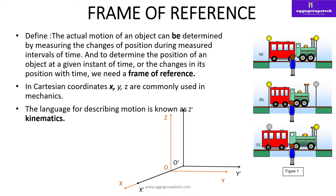کسی دوسرے reference سے measure کرنے کے لیے اس کو o-dash denote کرتے ہیں جس کا خود کا الگ origin ہے۔ y-dash جو y-axis کو parallel ہوتی ہے، x-dash جو x-axis کو parallel ہوتی ہے، اور z-dash جو z-axis کو parallel ہوتی ہے۔ So with respect to what frame of reference we are measuring the motion of an object — that is the frame of reference. اس طرح کی motions کو ہم kinematics بولتے ہیں۔